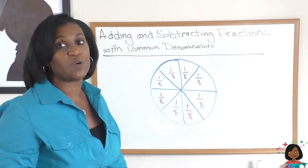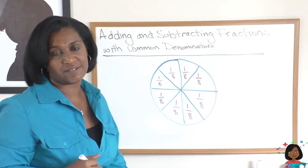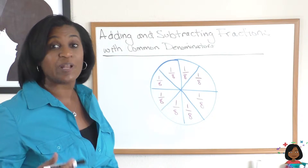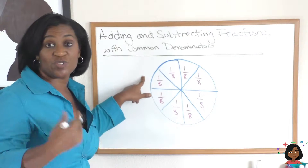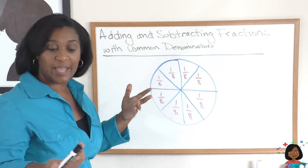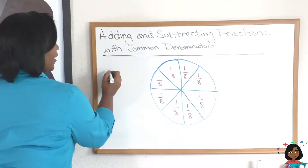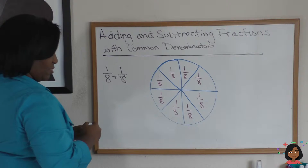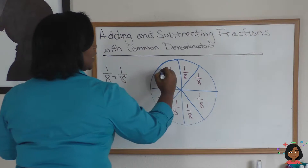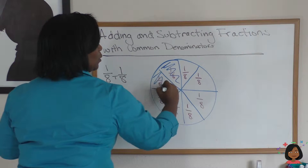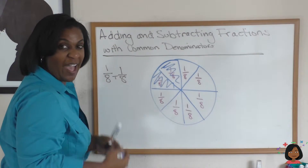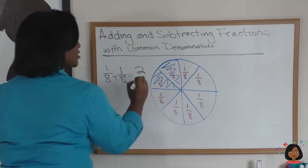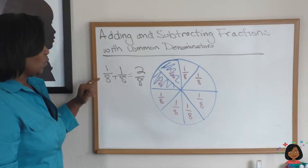I decided that I wanted to have two of the slices — so what piece of the pie would that be? I'm going to add one slice, which is 1/8, to another slice, which is 1/8. So we do 1/8 plus 1/8, and I'm going to go ahead and color it in. How many eighths do I have? I now have two of my eighths.